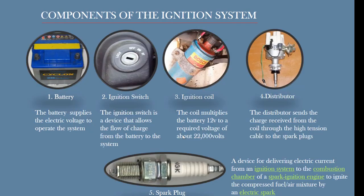The components of the ignition system include the battery, the ignition switch, the ignition coil, the distributor, and the spark plug. Each of these components performs a function. The battery supplies the electric voltage required to operate the system — for a regular car battery, it is 12 volts. The ignition switch is a device that allows the flow of charge from the battery to the rest of the ignition system.